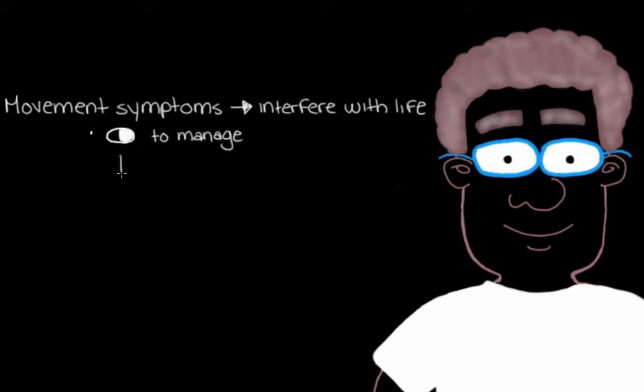When the movement symptoms of Parkinson's disease start to interfere with a person's day-to-day living, that's when we would normally try to find medications that can help manage and minimize the problems. But the most effective medication we currently have, L-DOPA, can cause side effects after several years of use that also need to be managed, like dyskinesia and wearing off.